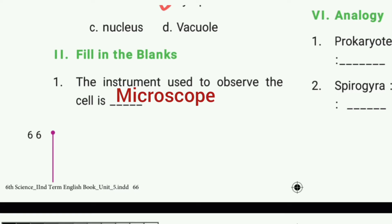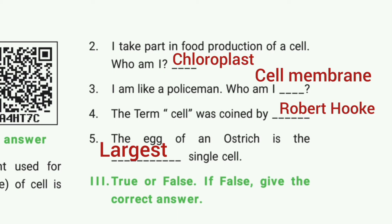Then fill in the blanks. First one: the instrument used to observe the cell is dash. The answer is microscope. Second one: I take part in food production of a cell — who am I? The answer is chloroplast.